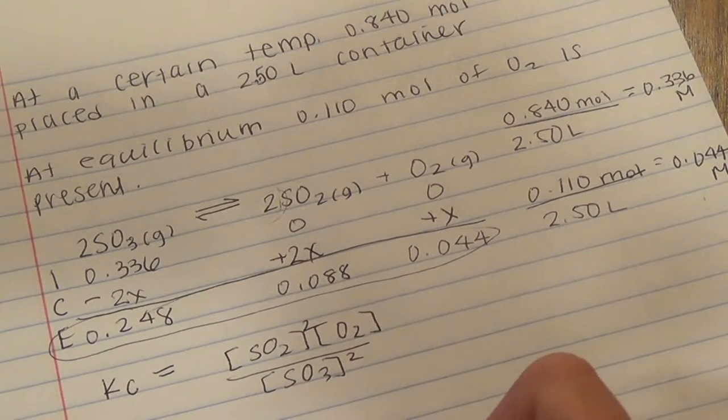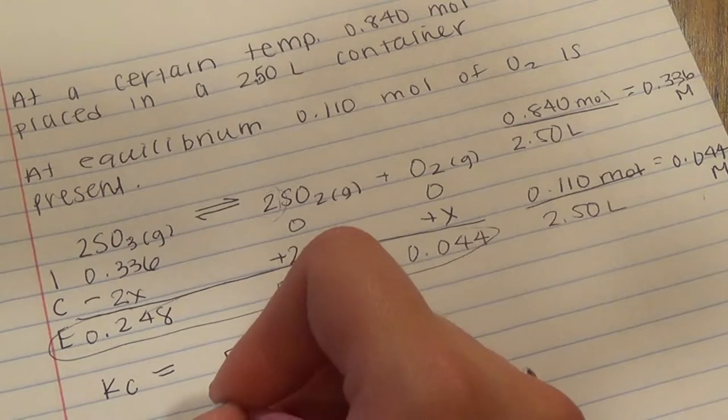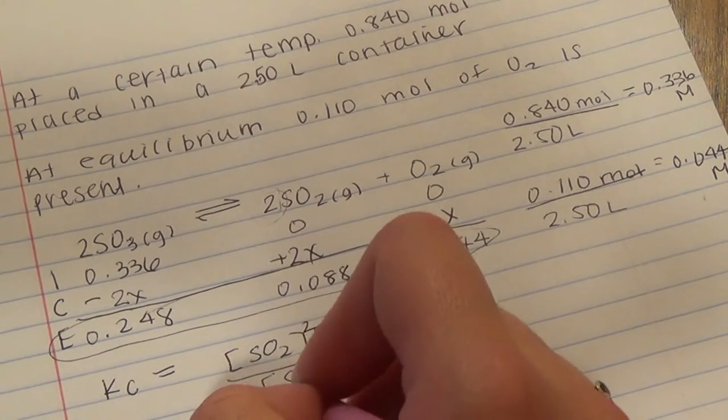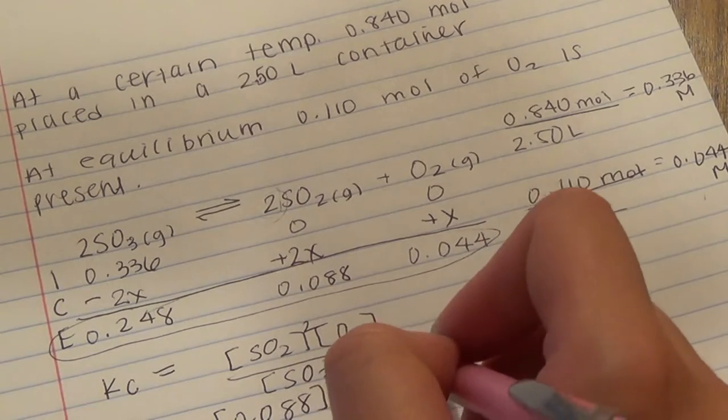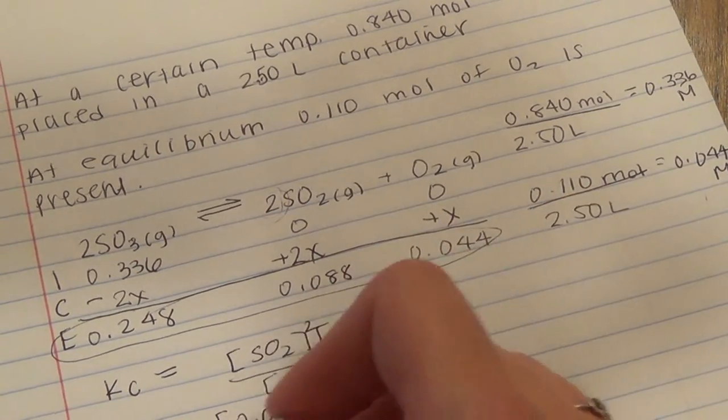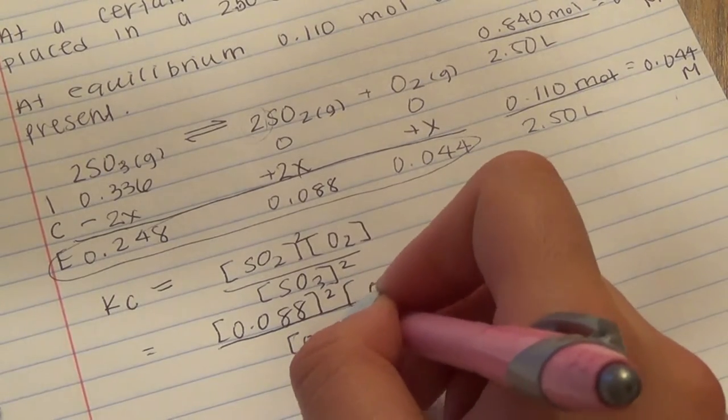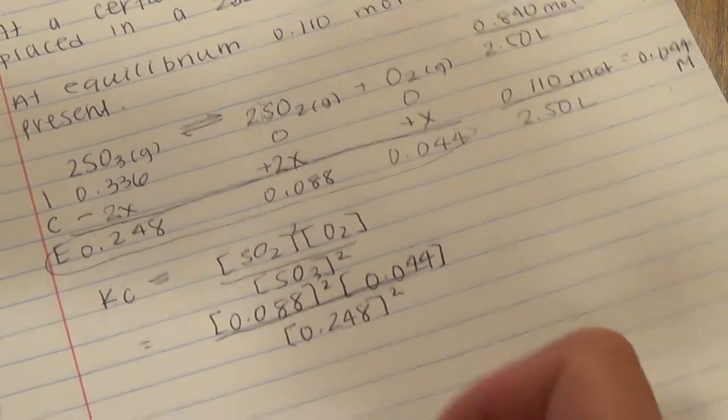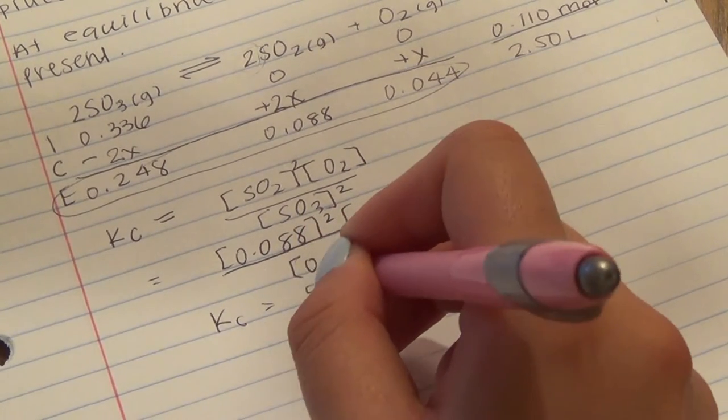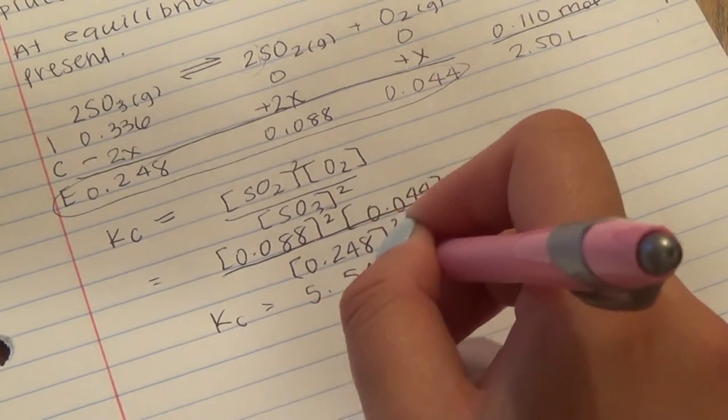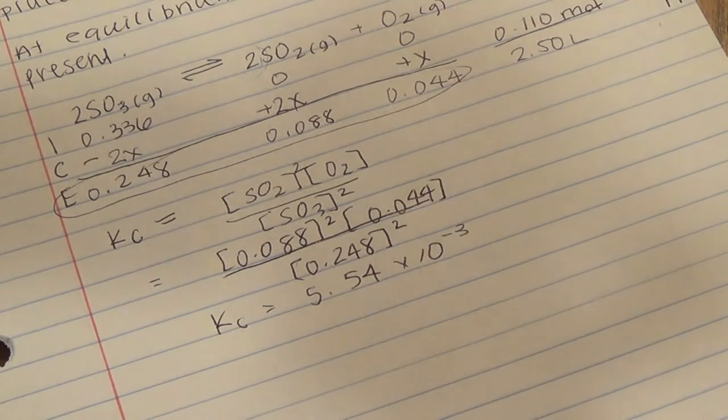So if we plug in the numbers, we get 0.088 squared times 0.044 divided by 0.248 squared. And that, once all the math is done, we get 5.54 times 10 to the negative 3 equals Kc.